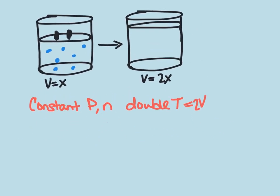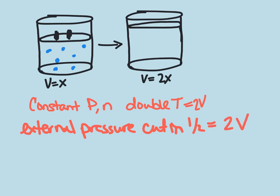Another way you could accomplish this is if the external pressure is cut in half, then the pressure inside of the container will reduce, or the pressure holding the piston down will reduce, and the volume of that gas will also double.